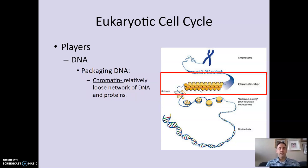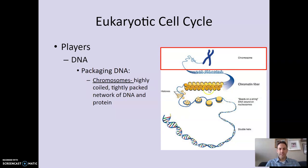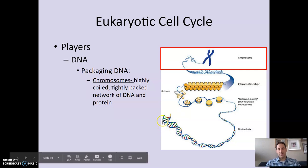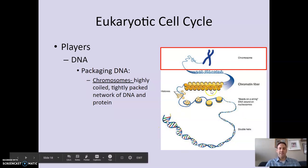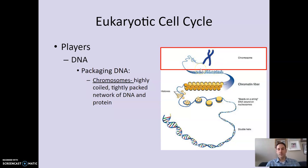Those beads come together to form a slightly tighter coil called chromatin. Chromatin is a relatively loose network of DNA and protein — like a rope thrown in a heap, a little bit organized. We can then coil that chromatin up even more through a highly specified process to get a really tightly packed structure, which we call a chromosome. So DNA, chromatin, and chromosomes are essentially the same thing — when it's loosely coiled, we call it chromatin; when it's tightly coiled, we call it a chromosome.